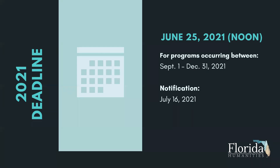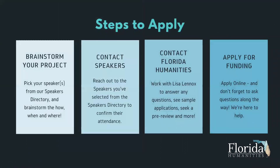After this webinar you can sit back, think it over, and reach out to Lisa. The application deadline is June 25th, 2021 at 12 p.m. noon — all our grant deadlines are at noon. This funds programs running between September 1st and December 31st, 2021. If you apply by June 25th, you'll hear back by July 16th — an incredibly quick turnaround.